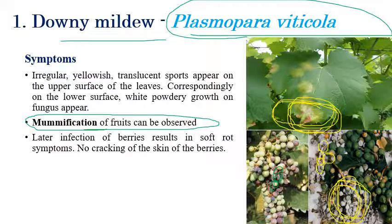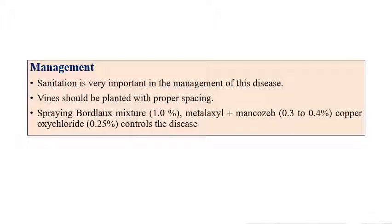This disease has great historical importance: Millardet accidentally discovered Bordeaux mixture for the control of grape downy mildew. For management, sanitation is very important, along with proper spacing in vineyards and spraying Bordeaux mixture. Spraying Bordeaux mixture or the combination of metalaxyl and mancozeb at 0.3 to 0.4 percent, or copper oxychloride at 0.25 percent, can control the disease.